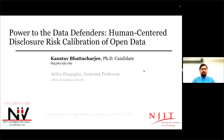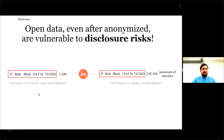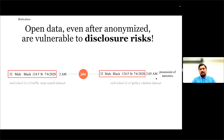Let's dive straight into the problem. Open data, even after they are anonymized, are vulnerable to disclosure risk. If we join a traffic stop-and-search dataset with a police citation dataset based on some common attributes like age, gender, race, location, and date, we found that this person was first stopped at 2 a.m. and was later cited for possession of narcotics just 5 minutes later. This is an example of identity disclosure while joining open data.